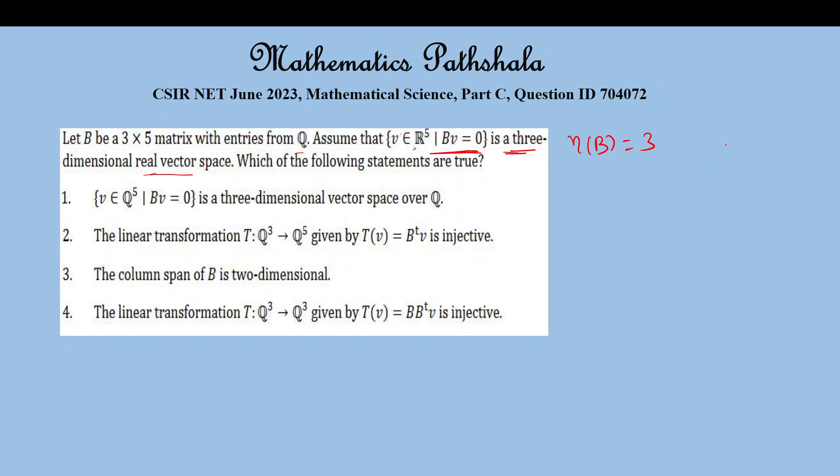So B is a 3 by 5 order matrix. The rank of B equals column 5 minus nullity of B, which is 5 minus 3 equals 2. Rank of B is 2.